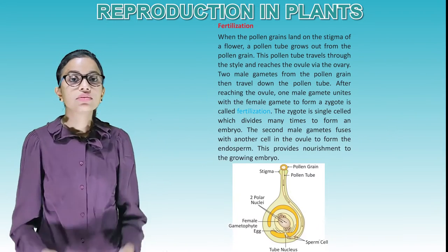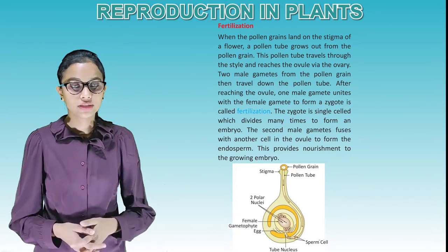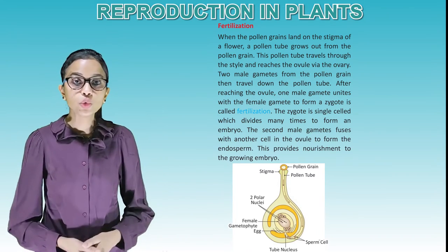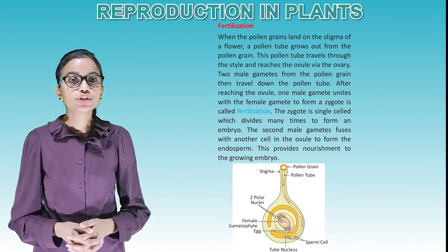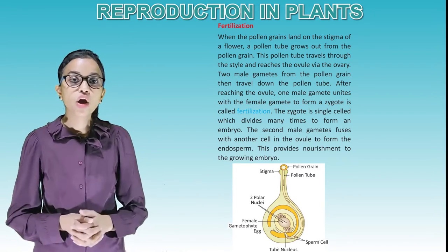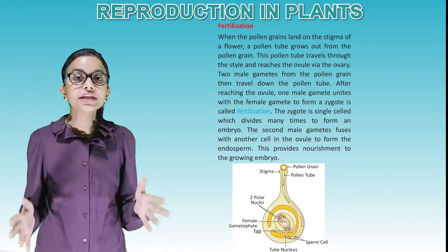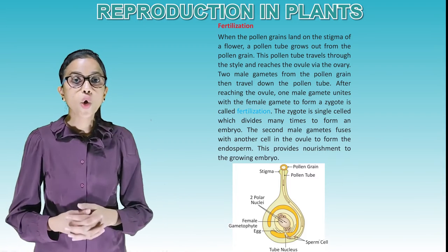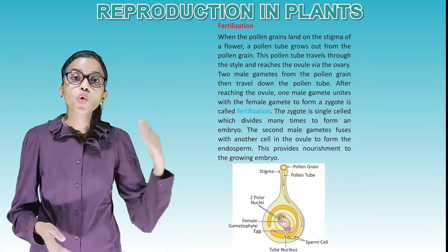Fertilization: When pollen grains land on the stigma of a flower, a pollen tube grows out from the pollen grain. This pollen tube travels through the style and reaches the ovule via the ovary. Two male gametes from the pollen grain travel down the pollen tube. After reaching the ovule, one male gamete unites with the female gamete to form a zygote — this is called fertilization. The zygote is a single cell which divides many times to form an embryo. The second male gamete fuses with another cell in the ovule to form the endosperm, which provides nourishment to the growing embryo.